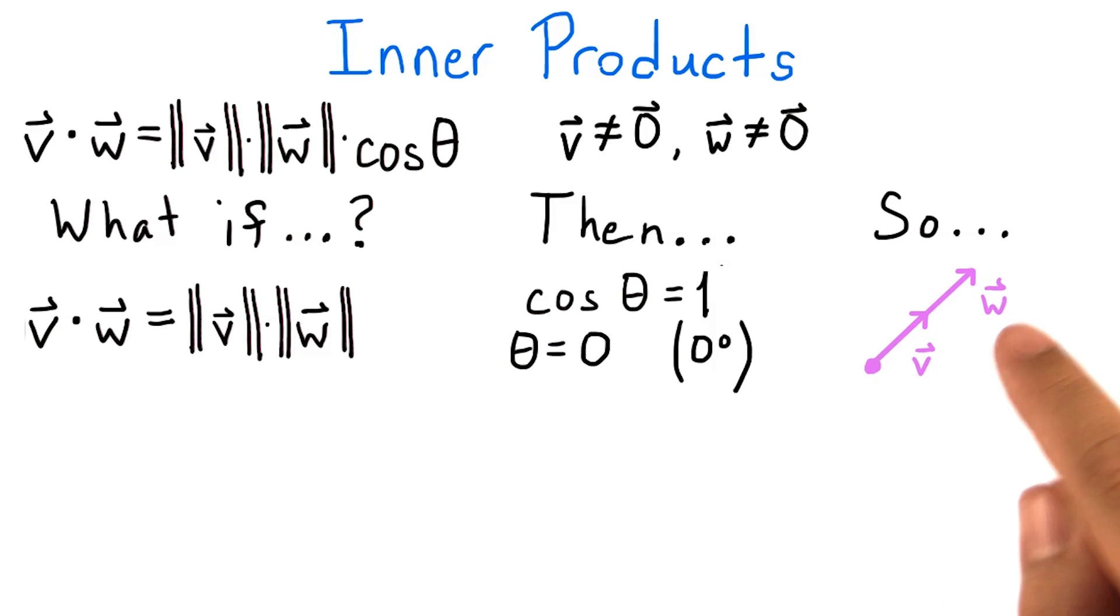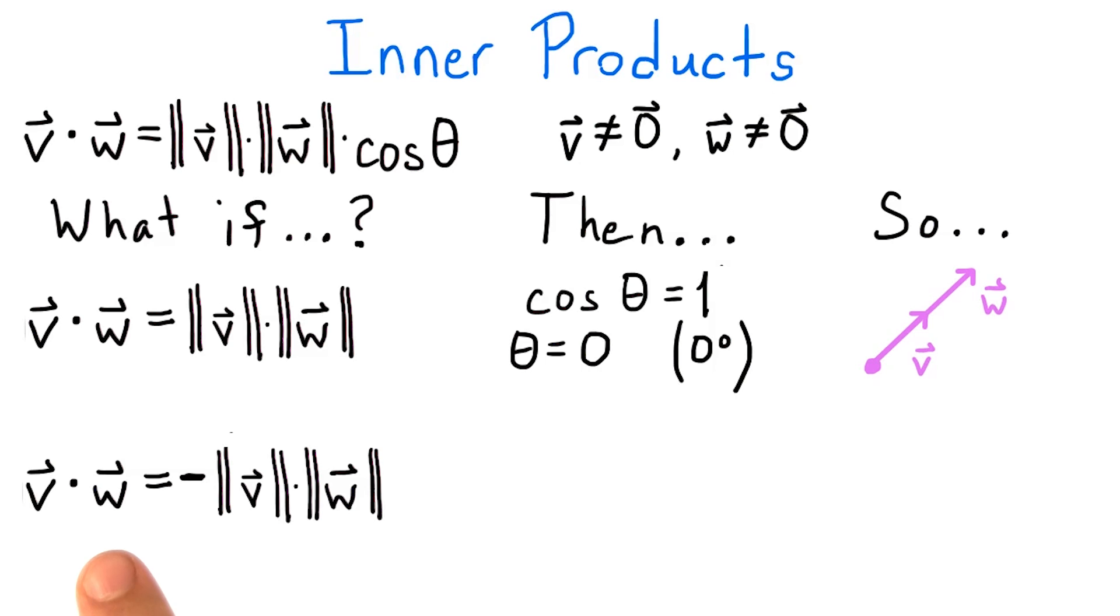Similarly, if v dot w equals the negative of the product of the magnitudes, we can conclude that cosine of theta equals negative one, which means that theta equals pi radians or 180 degrees. And that in turn means that v and w are pointing in opposite directions.